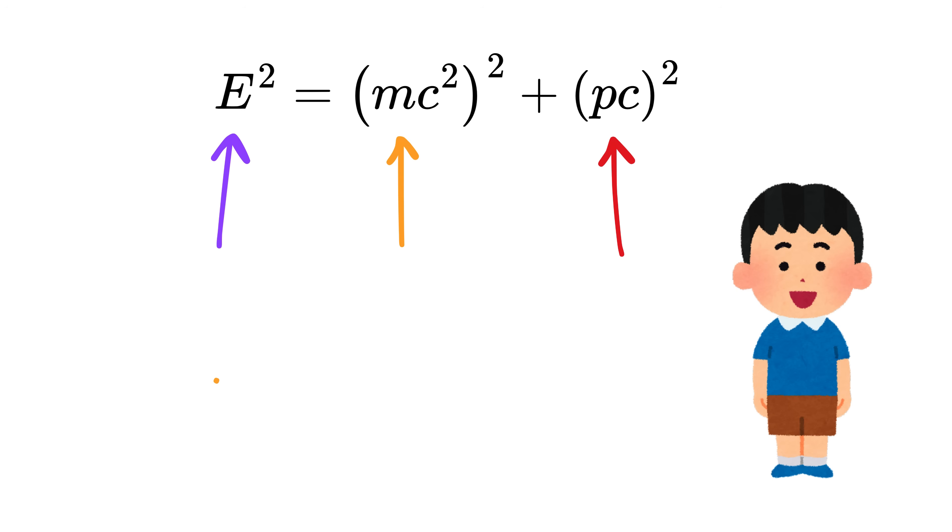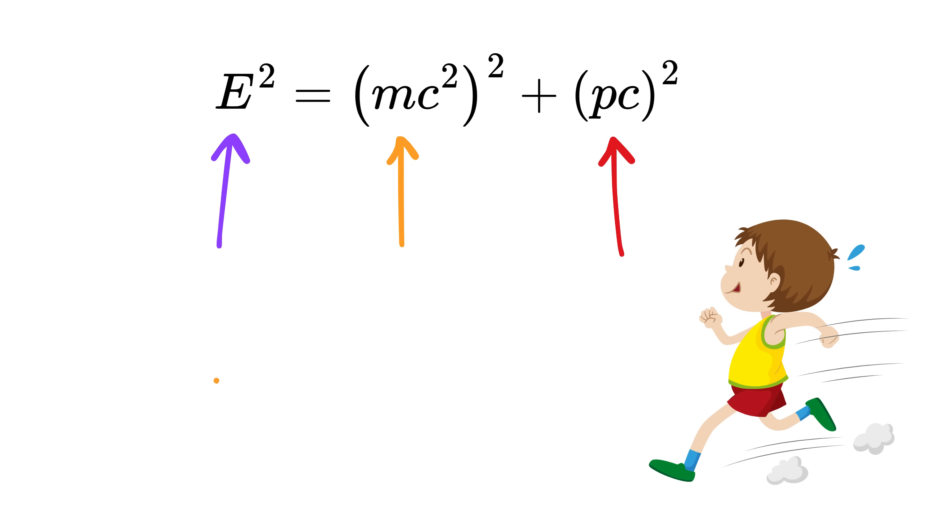So if the object is standing still, its momentum is zero, and the formula reduces to just E equals mc squared. But if the object is moving, or if it has no mass but still carries momentum like a photon, then that second term becomes important. This complete version of the energy formula helps us understand all kinds of particles in any condition under one single rule.